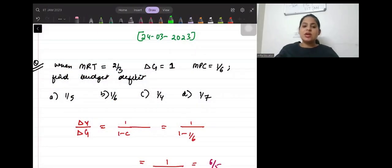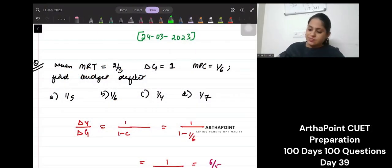Very good question. So it says marginal tax rate is 2 by 3, change in G is 1, marginal propensity to consume is 1 by 6.